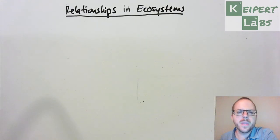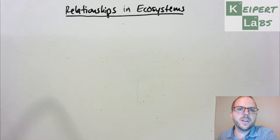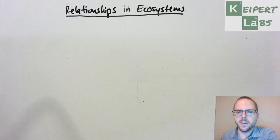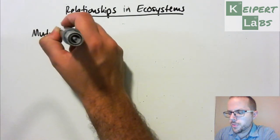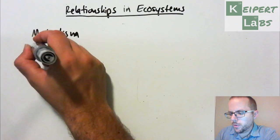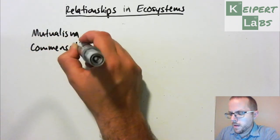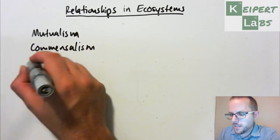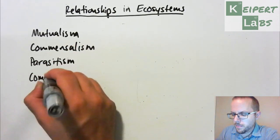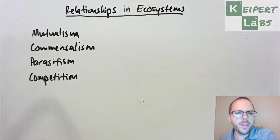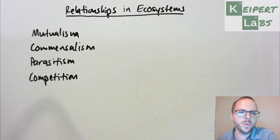Hi everyone, welcome to this episode of Kaipit Labs. In this video we're going to be talking about relationships in ecosystems — some examples of how different living things interact with and are affected by each other. The types of relationships we're going to go through are mutualism, commensalism, parasitism, and competition. We'll go through each one in turn, looking at specific definitions as well as some quick examples.